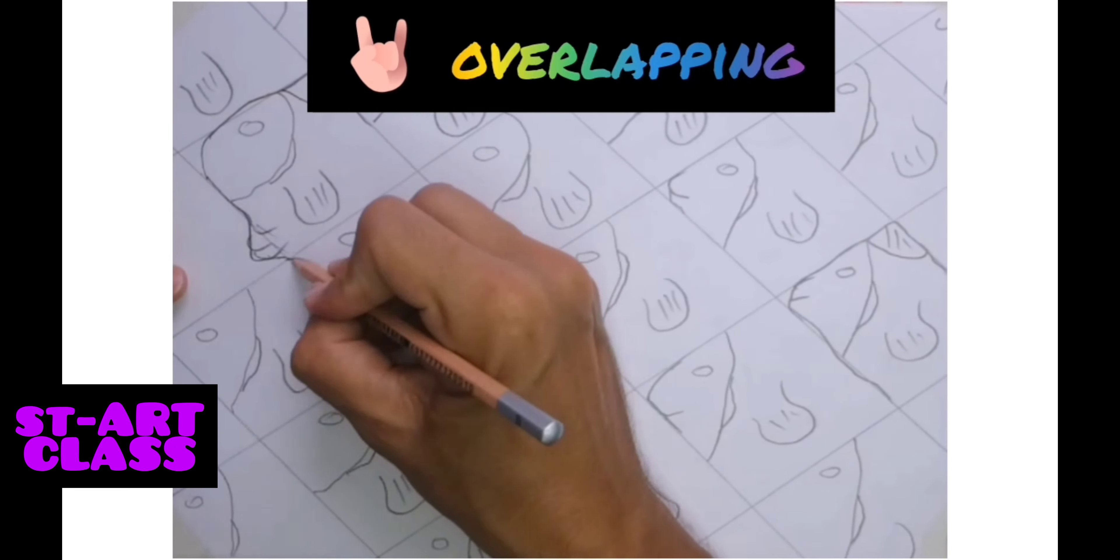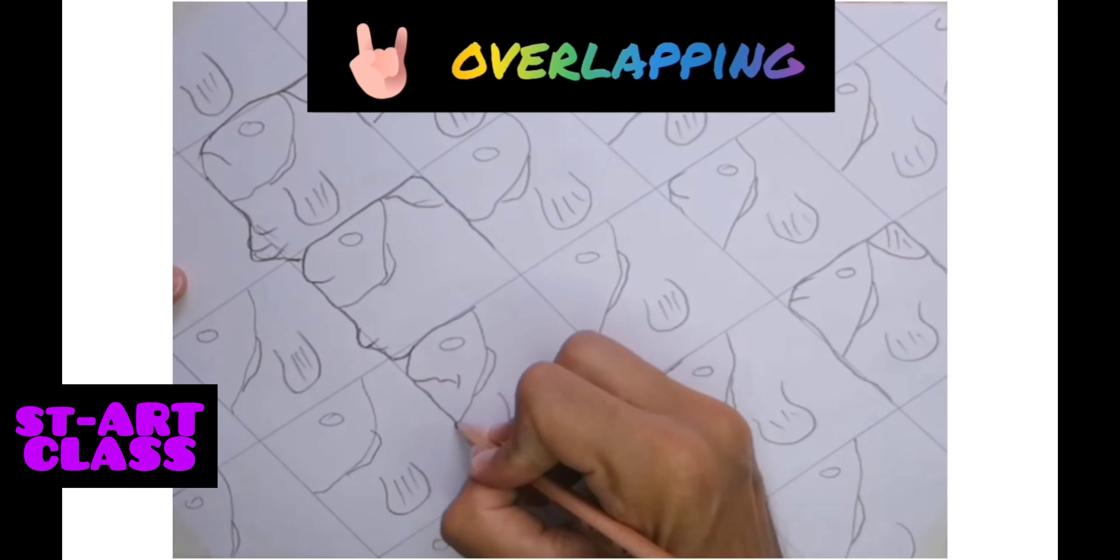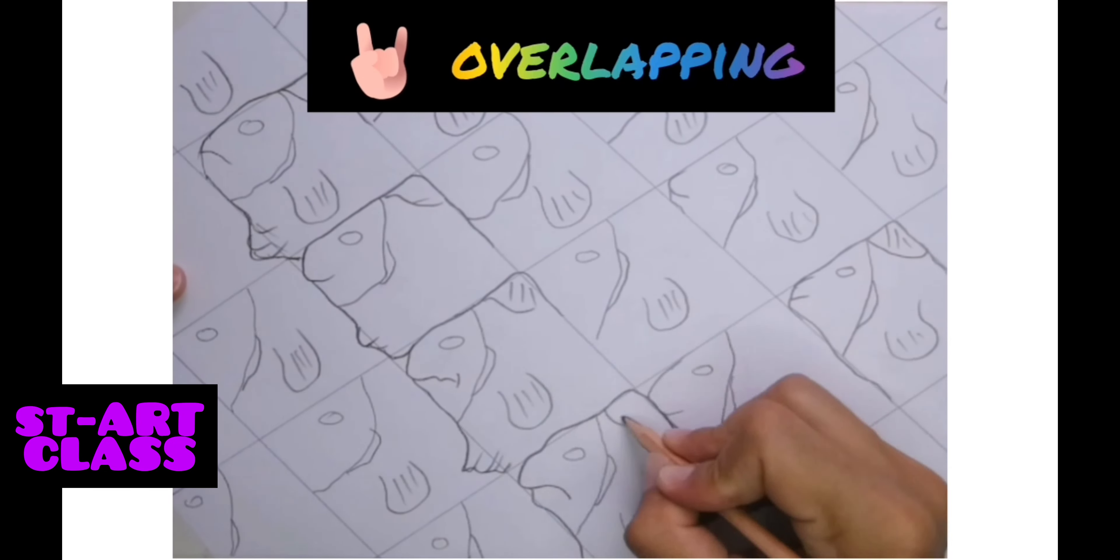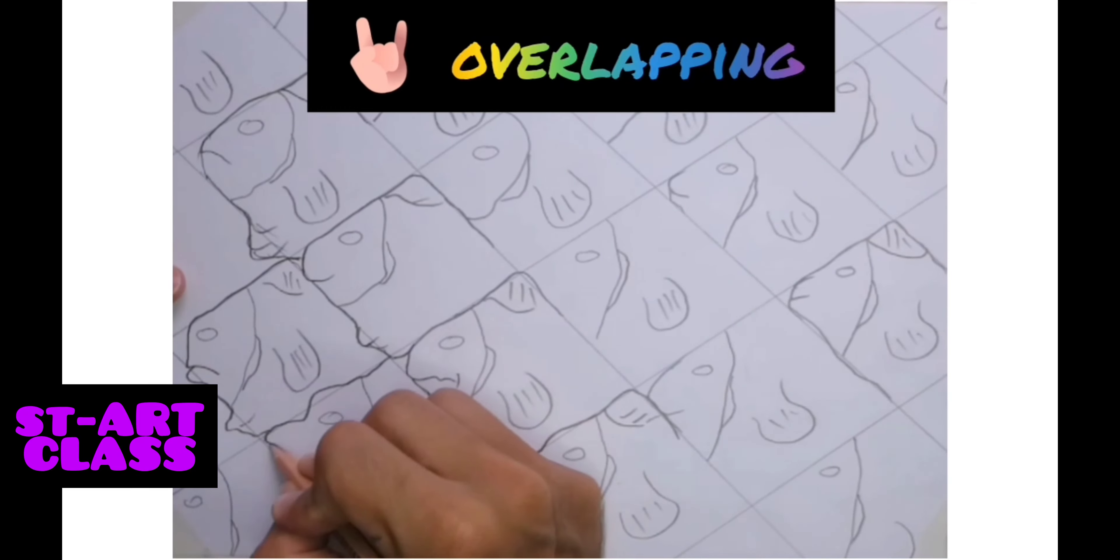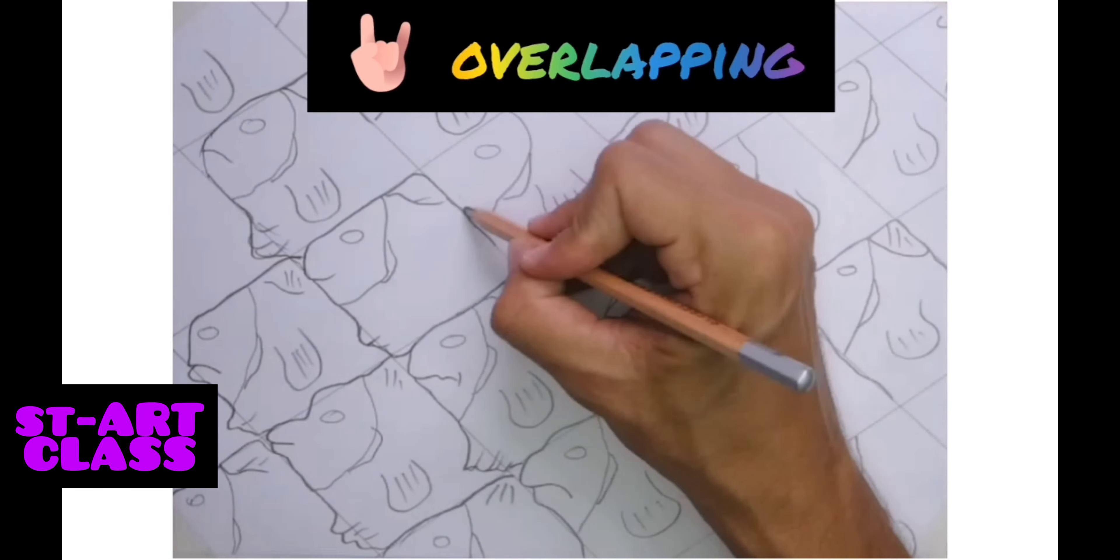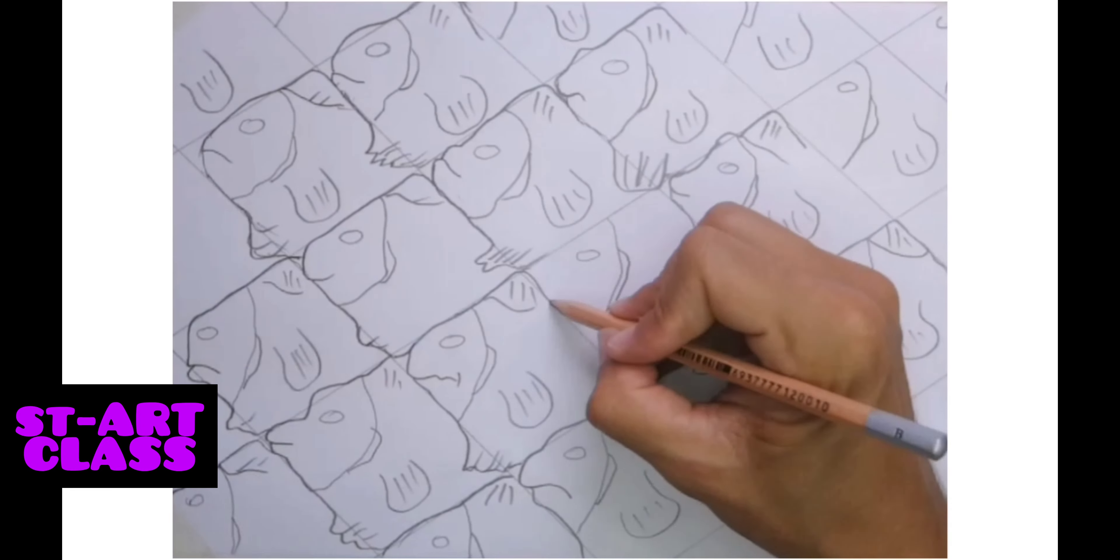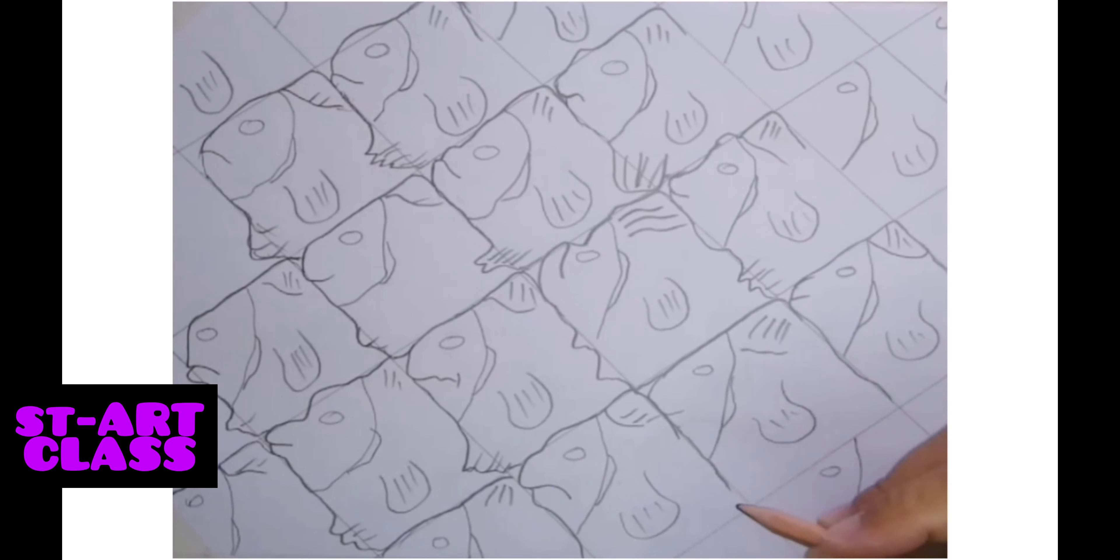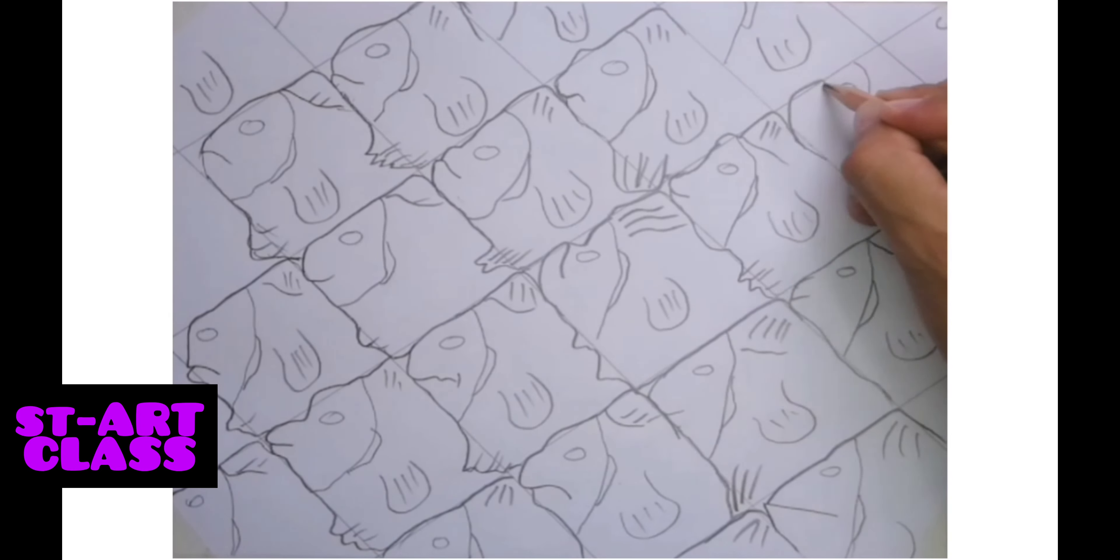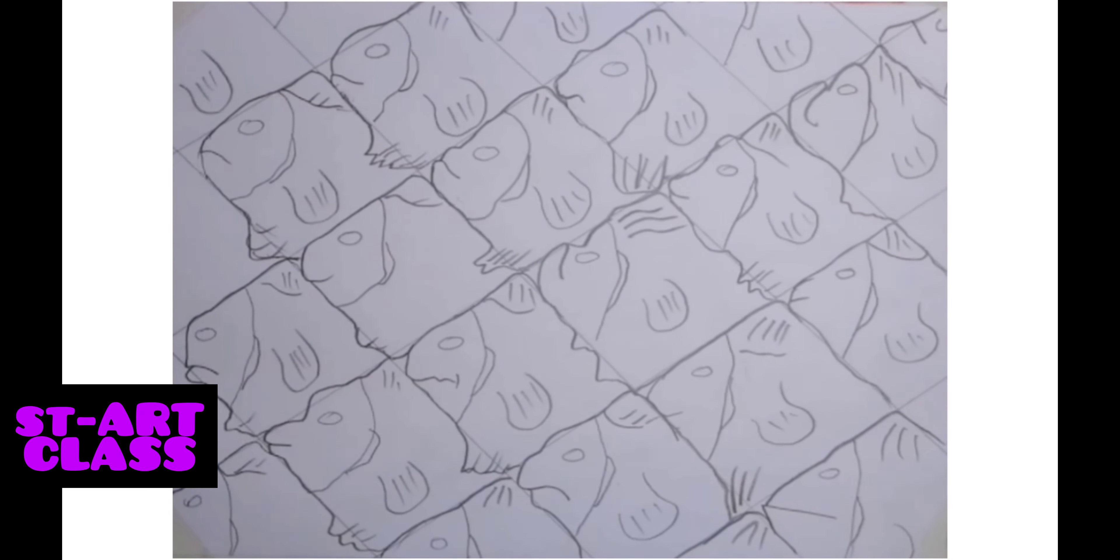You can turn those shapes into different characters where one part of the character will appear as a hidden part of the character which is next to it. And in that way you just keep repeating one after another.